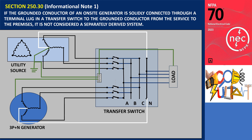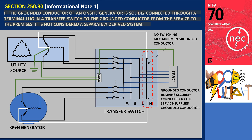According to the first informational note in this section, if the grounded conductor of an on-site generator is solidly connected through a terminal lug in a transfer switch to the grounded conductor from the service to the premises, it is not considered a separately derived system. This occurs when the alternate source transfer equipment does not involve any switching mechanism in the grounded conductor. As a result, the grounded conductor remains securely connected to the service-supplied grounded conductor while the alternate source is functioning and supplying power to the load being served.